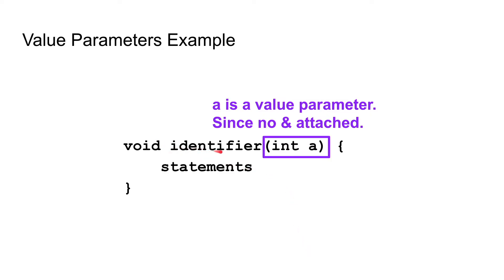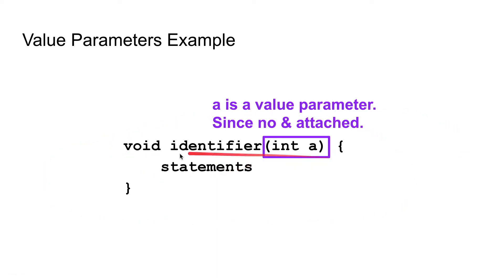If you don't remember what that looks like, this is what it looks like right here. It is just this function header — the body of the function with the header. When we give this parameter a data type and a name, it's just the data type and the name. There's no ampersand attached to this name inside of here, and we will see what that ampersand means in just a second.